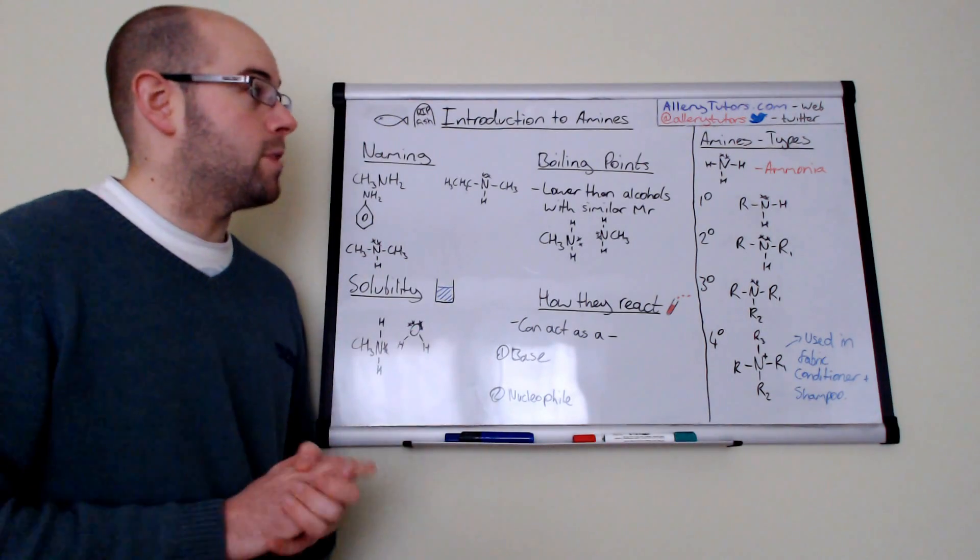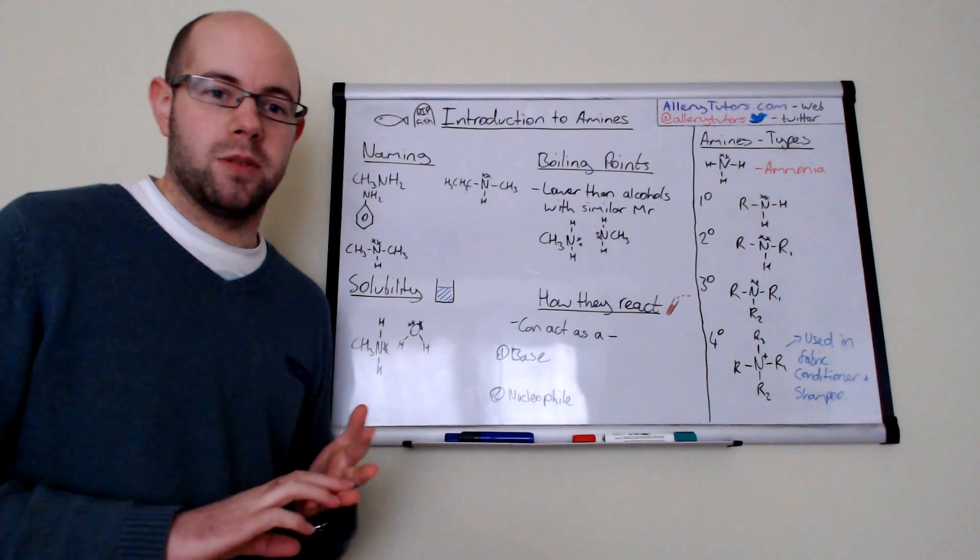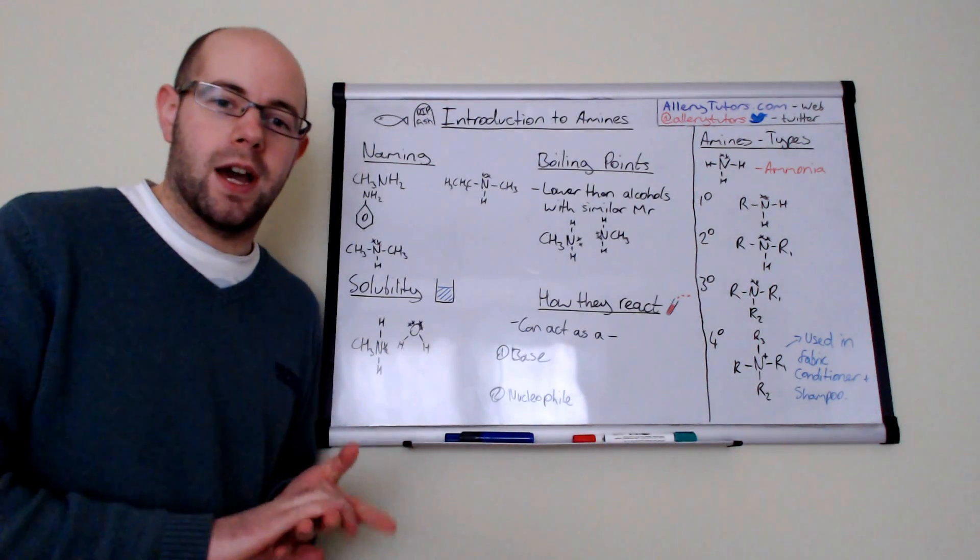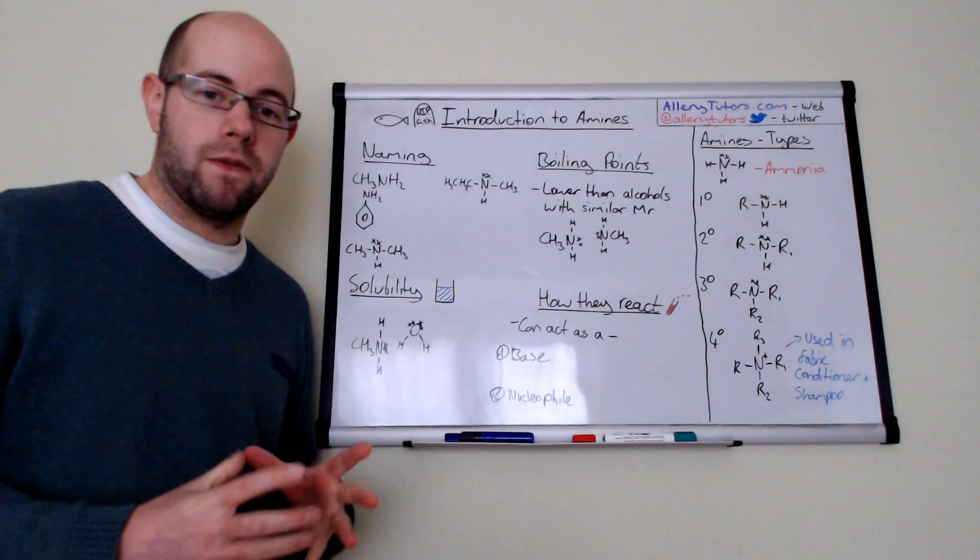Now I'm going to go through basically the types of amines and mainly we're going to go through things like boiling points, solubility, nomenclature and how they react as well. So we're going to start with looking at the four types of amines.